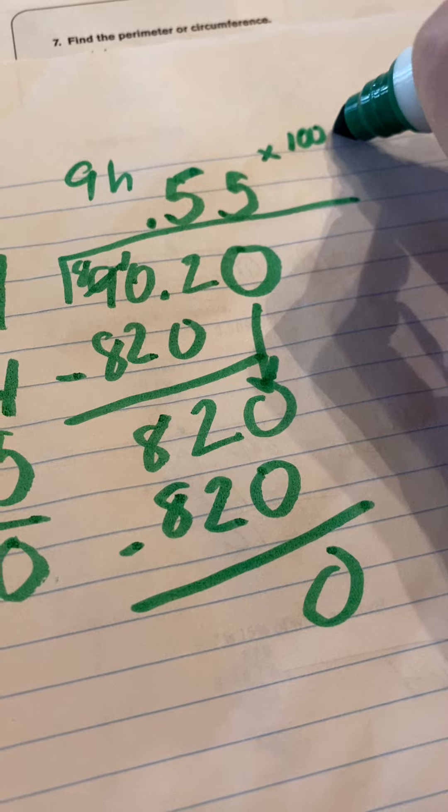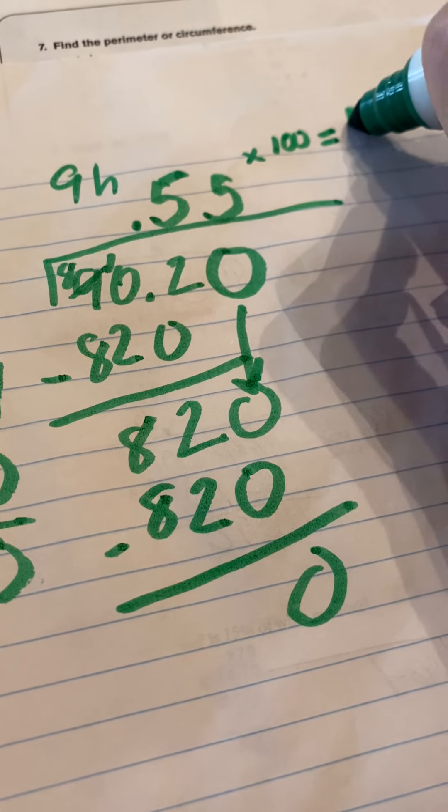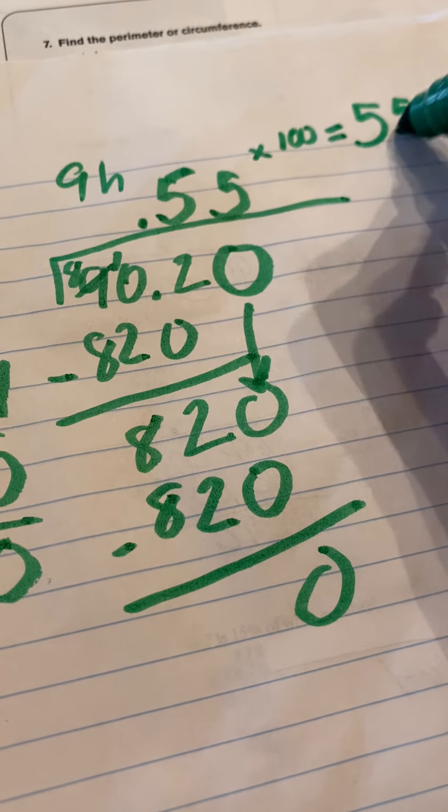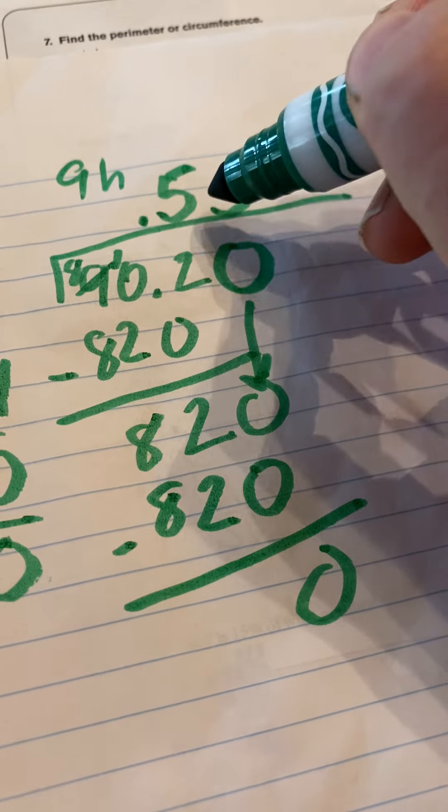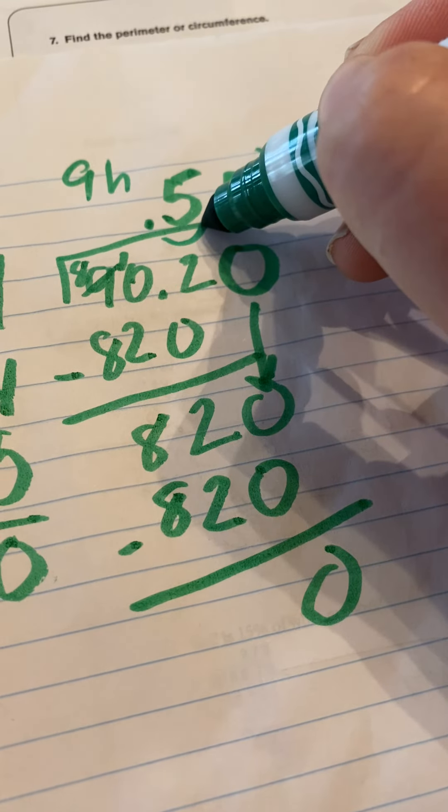So we get the decimal 0.55. But if we want a percent, we know we have to multiply that by 100, right, to get our percent.